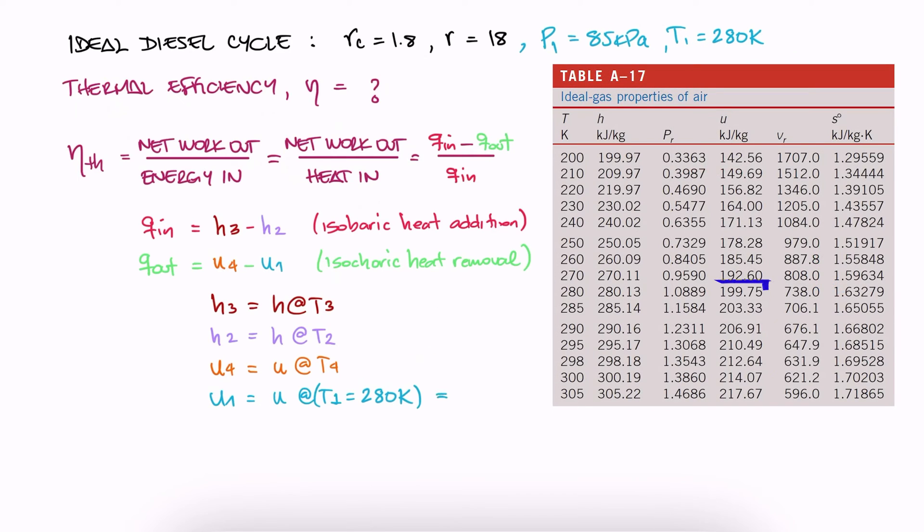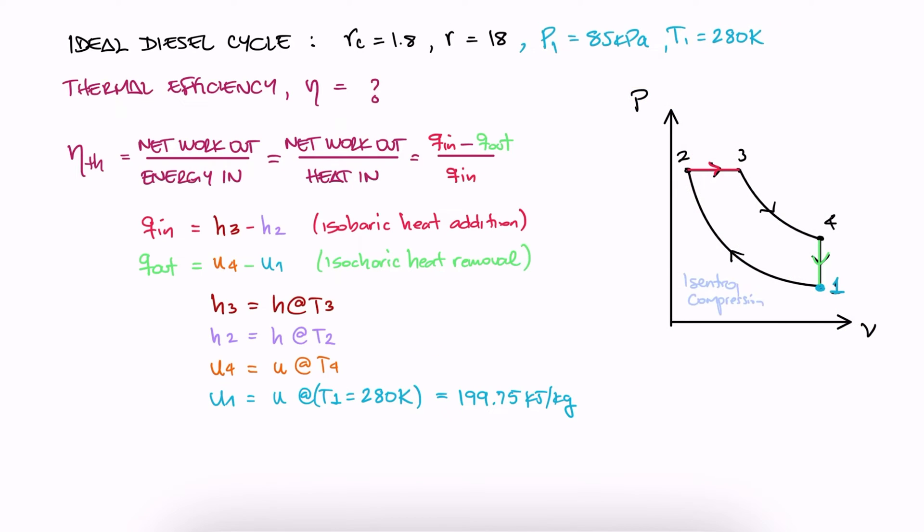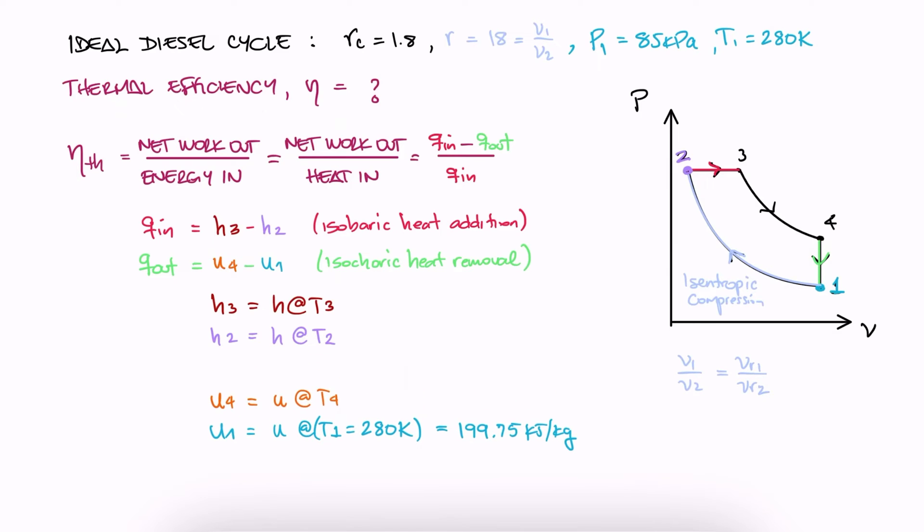we can just look up U1 for T1 in our tables. For T2, we know that the compression process is assumed to be isentropic, and since we have the compression ratio, or V1 over V2, we know we can use relative volumes to find T2.